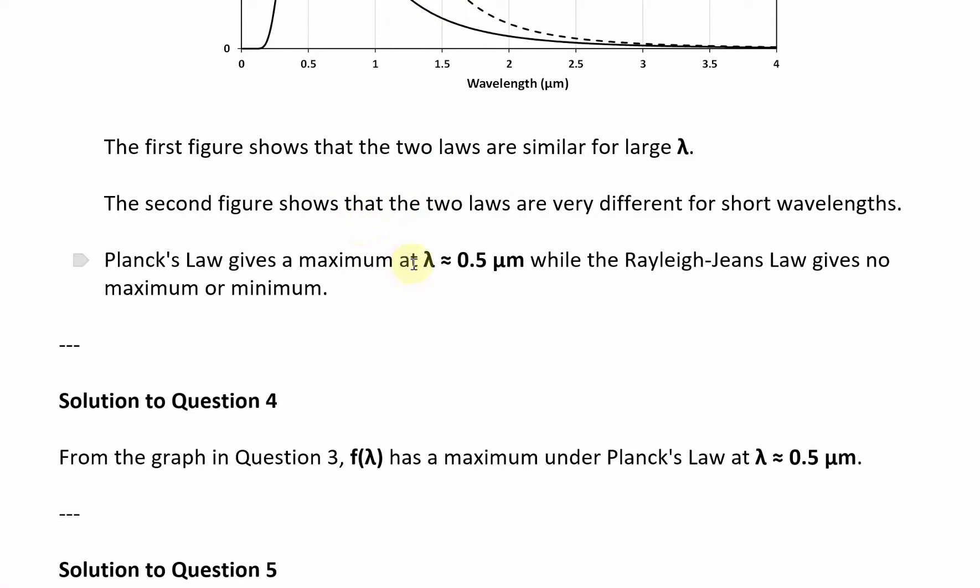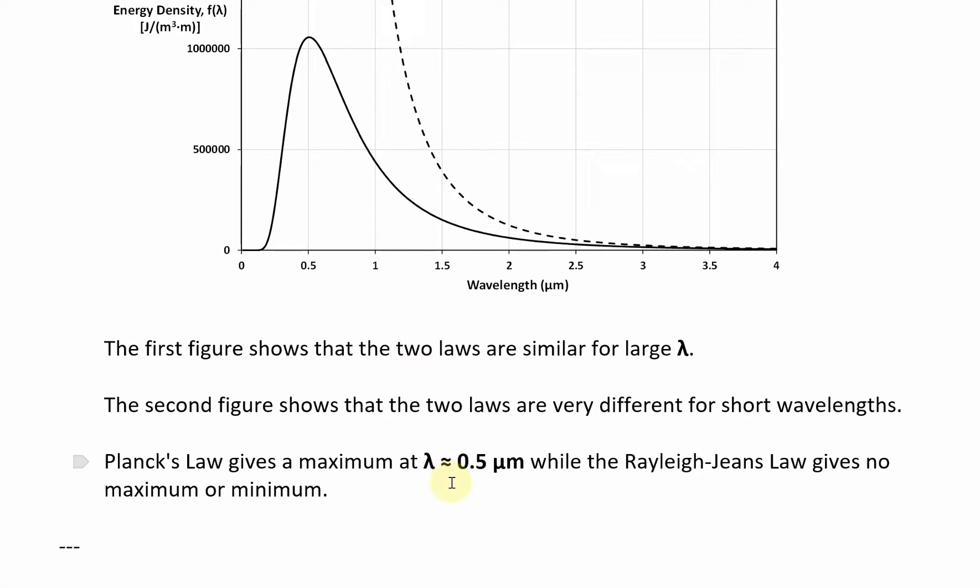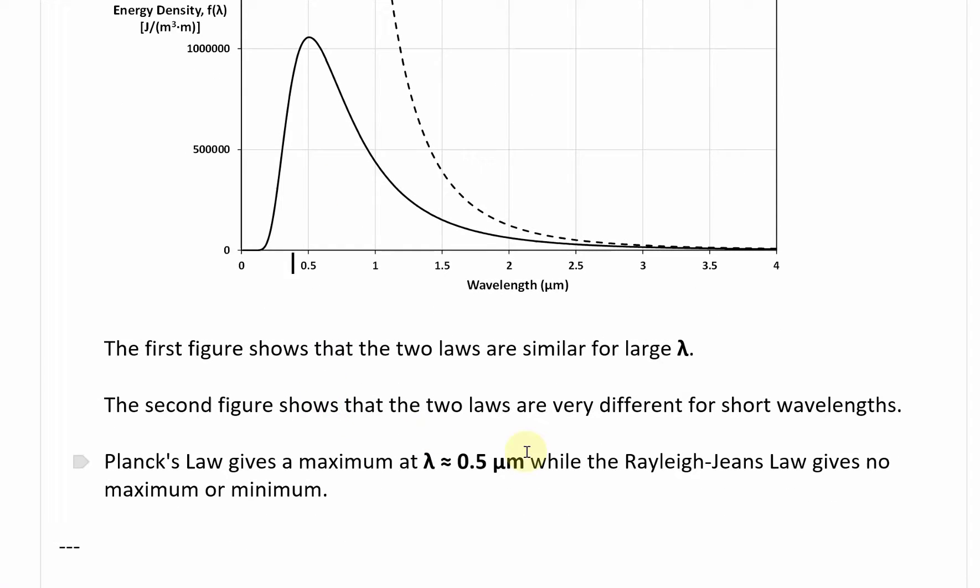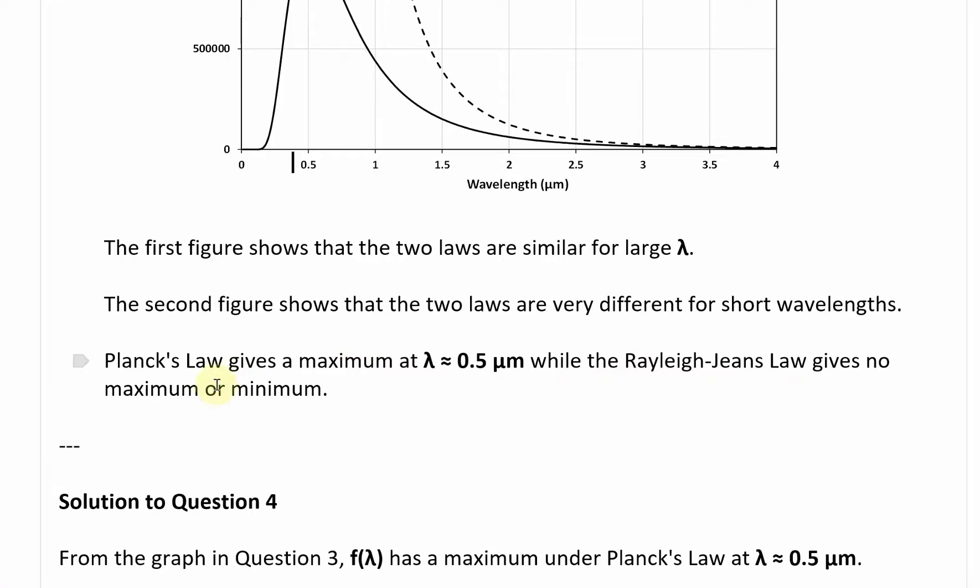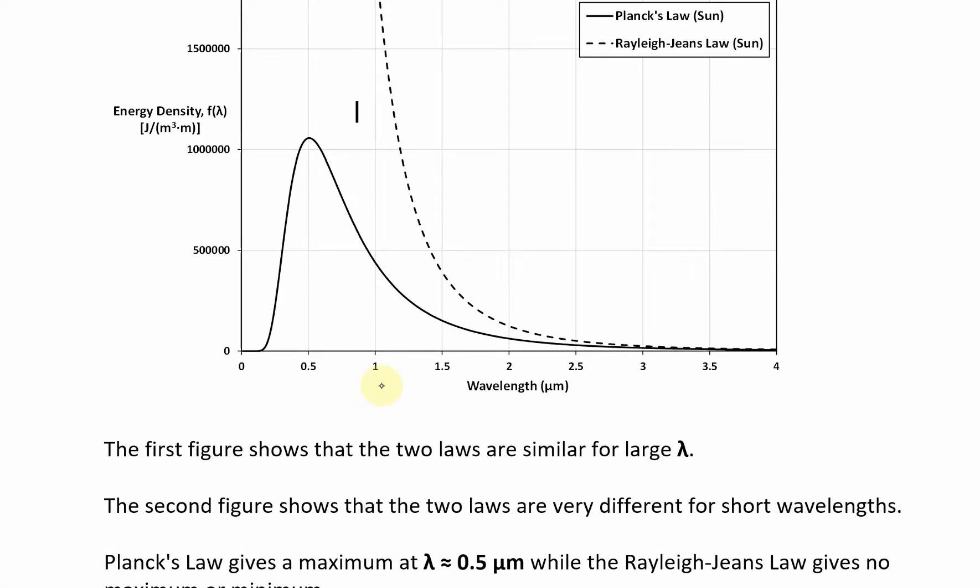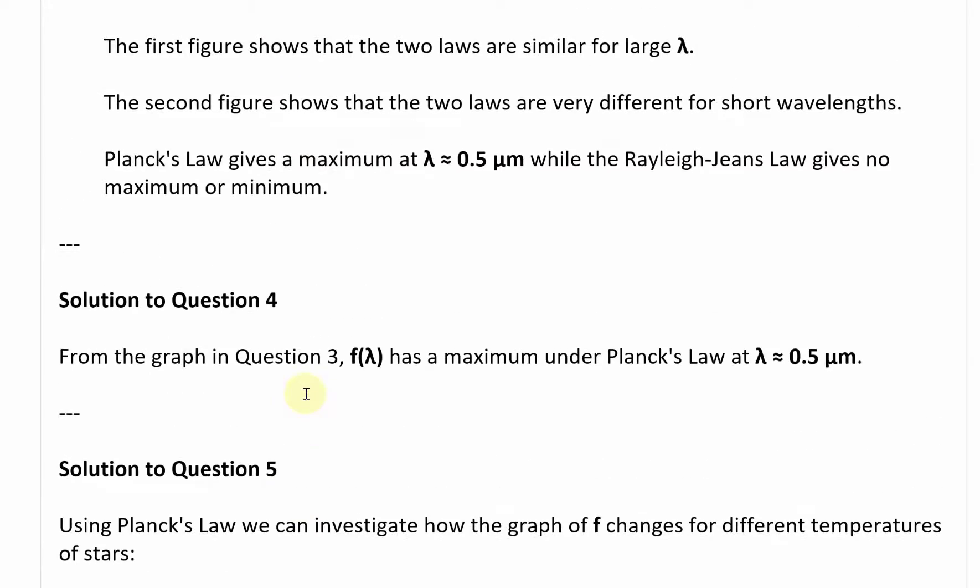You don't get a lot of these high frequency waves. Planck's law gives a maximum at, in this case, lambda equals 0.5 micrometers, so right about over there is the maximum, the peak energy density or intensity. Most of that light coming from the sun is in this 0.5 micrometer range. While the Rayleigh-Jeans law gives no maximum or minimum, it just keeps going to infinity. There's no minimum either, whereas this one, the minimum goes to zero for Planck's law.